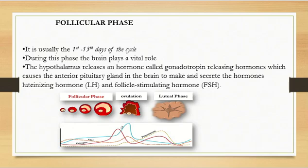In the menstrual cycle as a whole, the brain plays a vital role — specifically the hypothalamus and the anterior pituitary glands. During the follicular phase, there's an increase in follicle-stimulating hormone, which helps to develop the follicles. Follicles are fluid-filled sacs in the ovary that contain the eggs. As the follicle grows, it produces inhibin B and estrogen, which send a negative feedback to the pituitary gland.